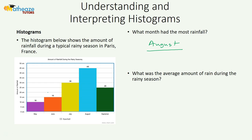What is the average amount of rain during the raining season? The amount of rainfall in May is 10, in June we had 15, in July we had 30, in August we had 45, and in September we had 25. And we have 5 months.